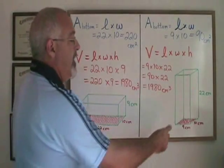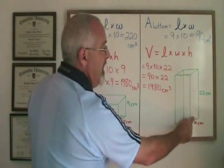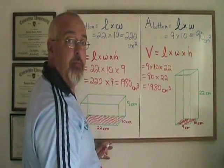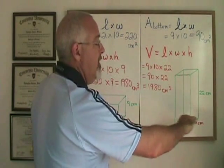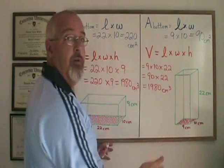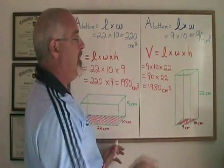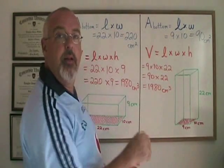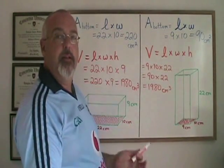Same here. The length times width is the area of the red rectangle on the bottom. And if we stacked enough of those all the way up to here, then we would be finding the volume because all of those red rectangles would be filling up the box. Filling up the box is volume.